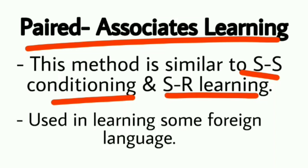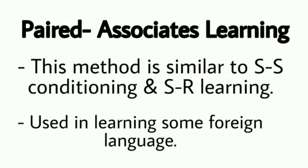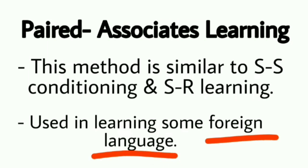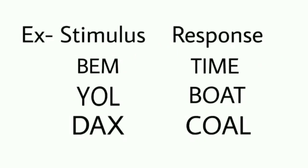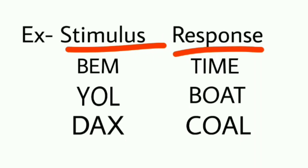Yahan pe verbal conditioning hoti hai, matlab bolkar learning hoti hai. Ye learning foreign language seekhne ke liye use hoti hai — foreign language ke jo words hain unhe seekhne mein aasani ho jaati hai. Pehle ek list banayi jaati hai pairs mein — ek hamari mother tongue ka word aur ek jo language seekhni hoti hai uska word. Dono words ko aise associate karte hain ki jab ek word bolen toh doosra word yaad aa jaye. Mother tongue ka word response hota hai aur jo language seekhni hoti hai woh stimulus hota hai.